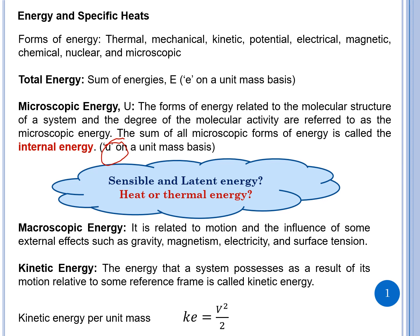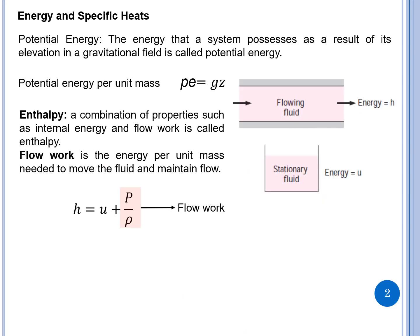Kinetic energy is the energy a system possesses as a result of its motion relative to some reference frame. The formula is mv²/2, and on a per unit mass basis it is v²/2. Similarly, potential energy is mgz on a general mass basis, referred to as gz on a unit mass basis.